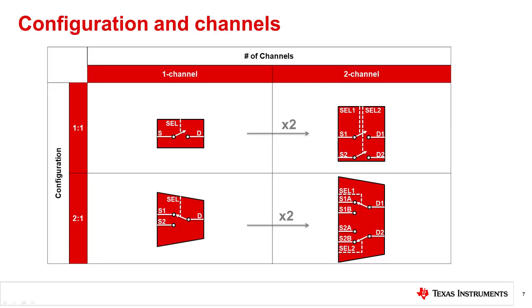As mentioned before, switches and multiplexers are available in multiple configurations. In this chart the configuration defines how many signals a switch or a multiplexer connects to a single line. The number of channels defines how many configurations are in a single device.